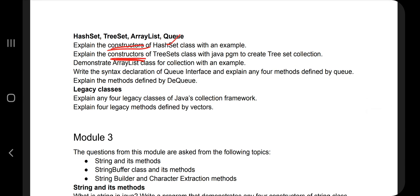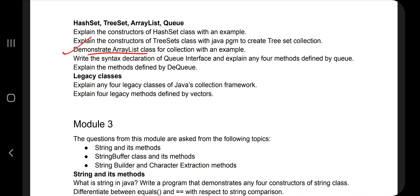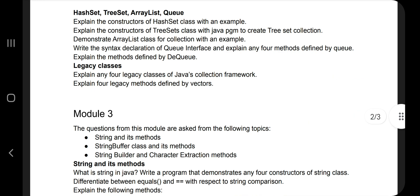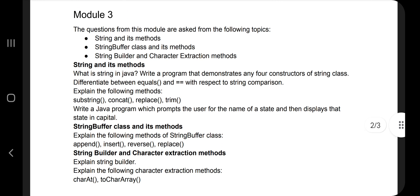In the TreeSet they have asked a Java program to create a TreeSet collection as well. In the demonstrate of ArrayList, they have also asked another question in the previous paper where they had given a specification you have to create a class for it. And about the Queue, two questions were there, and legacy classes - any four legacy classes and what are the different methods defined by the vectors that you have to specify.